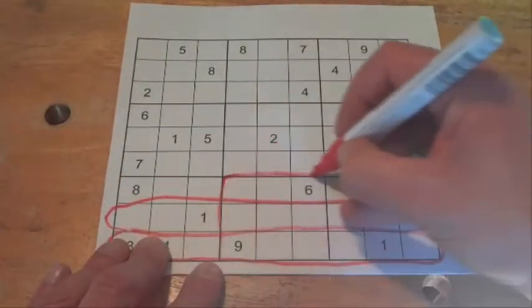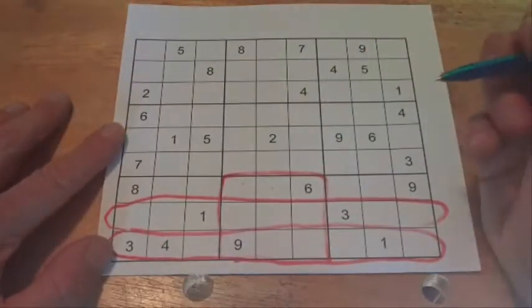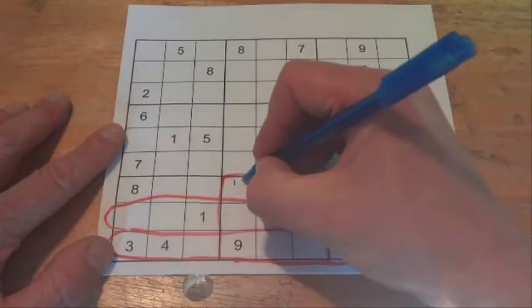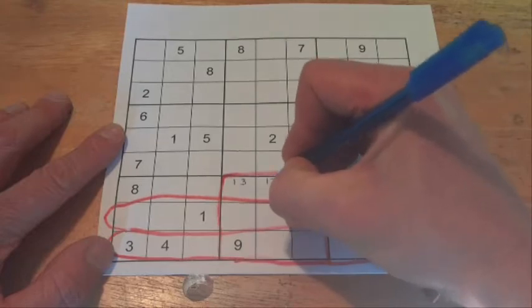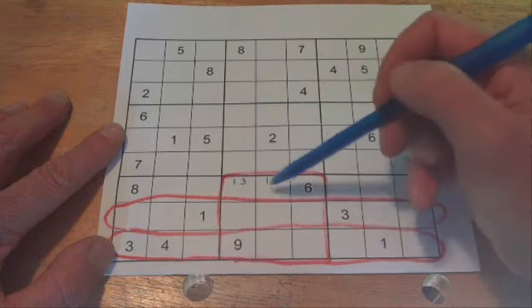So if we think about this little box there, we've got these two little cells here. We don't know which way around they're going to be, but one's going to have 1 and one's going to have 3, or vice versa.